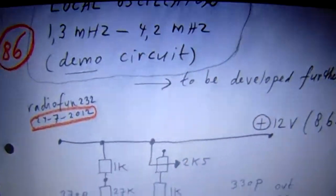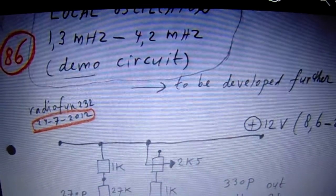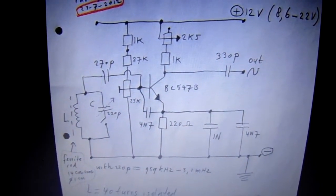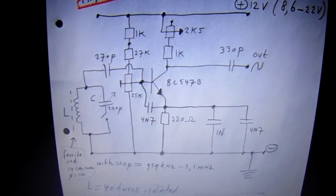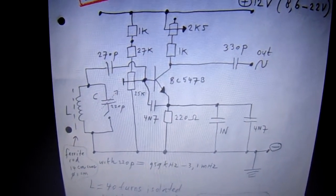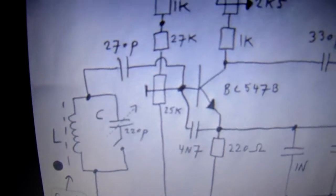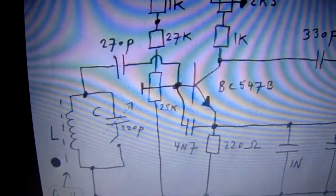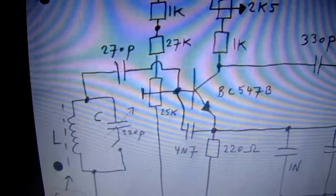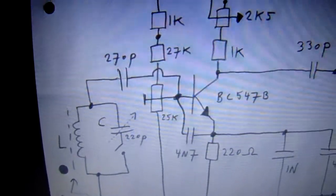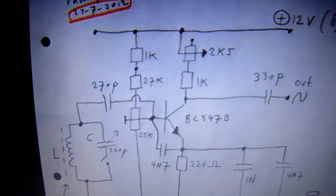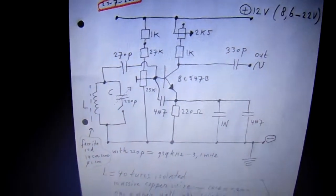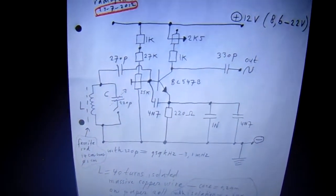A local oscillator, 1.3 megahertz up to 4.2 megahertz. The schematic working point and oscillation is set with this 25k, sorry, 25k potentiometer or 22k potentiometer, doesn't matter. It works. More oscillator videos on my YouTube channel.